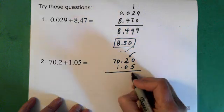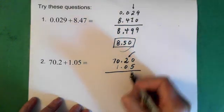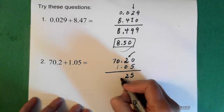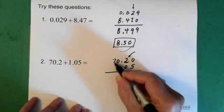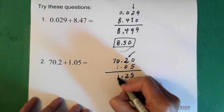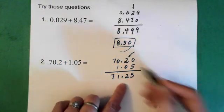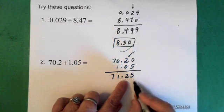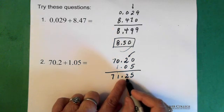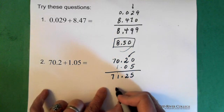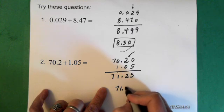We add here. We end up with 5. 2 and 0 is 2. Our decimal is here. This adds up to 1. And this adds up to 7. Now we know we have to round to the tenth place. The 5 changes the 2 to a 3. So then the answer is 71.3.